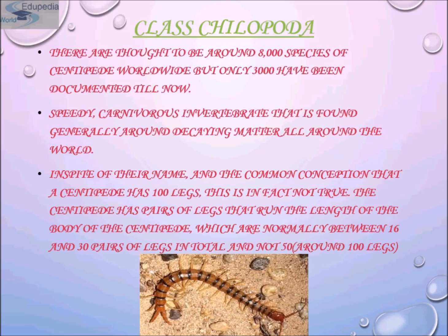The centipede is the most dominant predator of insects. Having claws on their first body segment is one of the centipede's most noticeable traits. Centipedes are carnivorous and mainly prey on insects, spiders, earthworms, and other small invertebrates, although some large species have been known to prey on small mammals and reptiles.